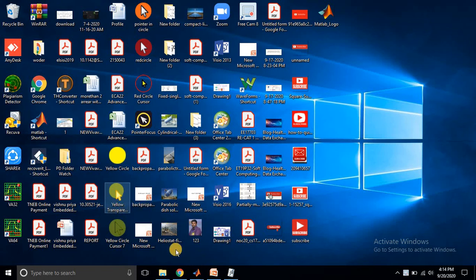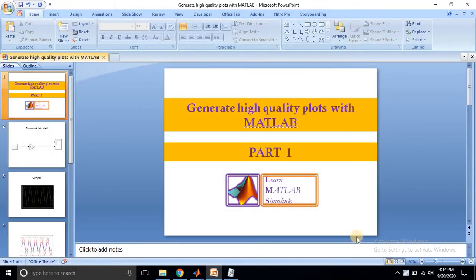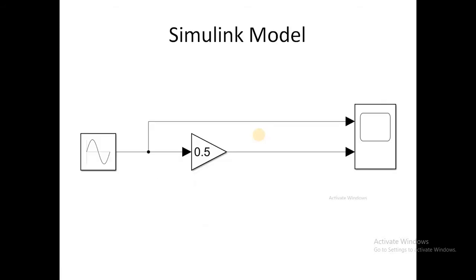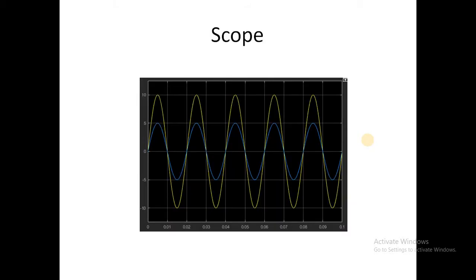Hello viewers, today we are going to see how to generate high quality plots with MATLAB functions. I am going to take some examples using a sinusoidal waveform processed via a gain block. I am going to multiply the sinusoidal waveform by a factor of 0.5 and then see the variation of that waveform in the scope window.